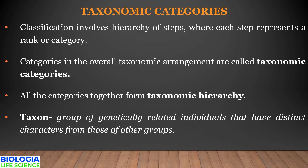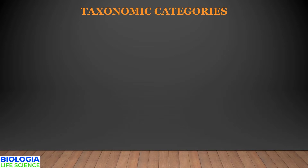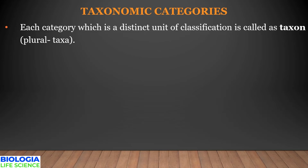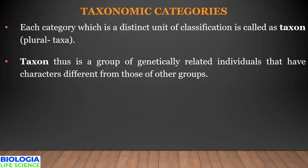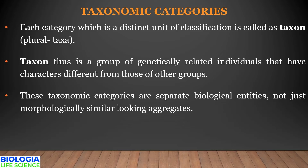When we look at each category of taxonomic hierarchy, it is a distinct unit of classification called a taxon. A taxon is a group of organisms which are genetically related and have common characters within them, but have distinct characters from those of other groups. For example, all fishes can form a taxon, all birds can form another taxon, and lichens can form yet another taxon.